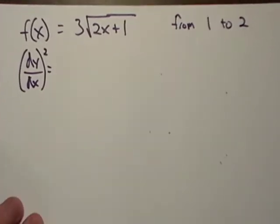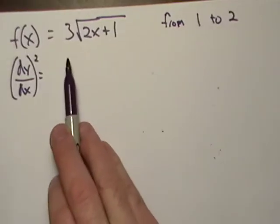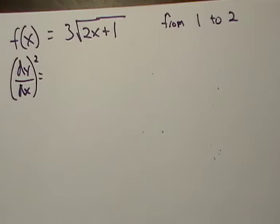The first thing we need according to the formula, we don't really need to do anything too crazy, except we need to find (dy/dx)². That is not the second derivative. That's just the first derivative squared. Let's find that.